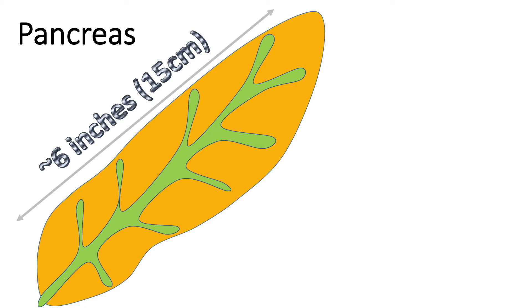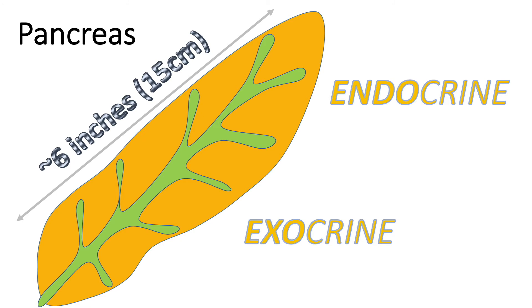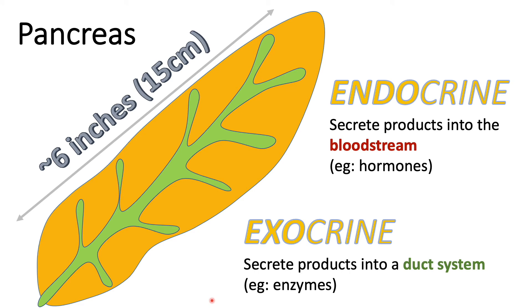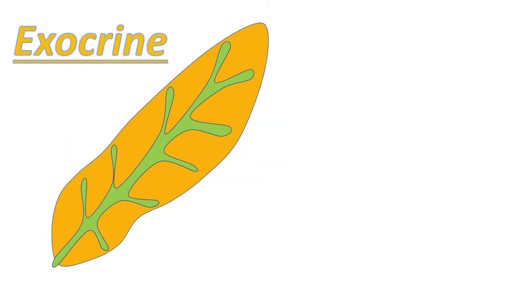The pancreas is a dual-function organ with both endocrine and exocrine cell types. With endocrine glands, they secrete their products directly into the bloodstream — for example, hormones such as glucagon and insulin. With exocrine glands, they secrete their products directly into a ductal system — for example, enzymes. Other ductal systems can include mucus or sweat glands. The exocrine secretions enter this duct system and make their way into the first component of the small intestine.